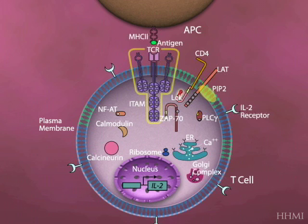NFAT will bind certain promoter elements that regulate the synthesis of the interleukin-2 gene. And of course, once you have interleukin-2 made, it will go through the ribosome, be translated and made into protein, and secreted through the ER-Golgi apparatus so that you can get interleukin-2 into the extracellular milieu.